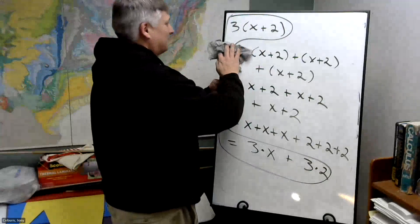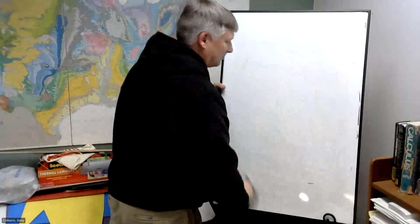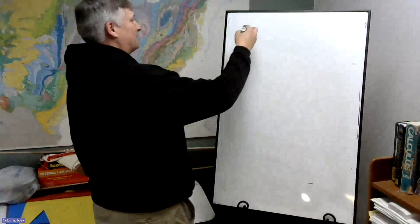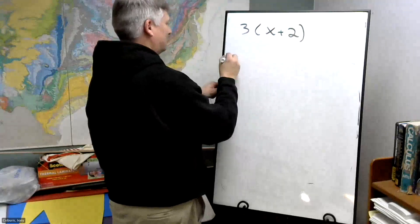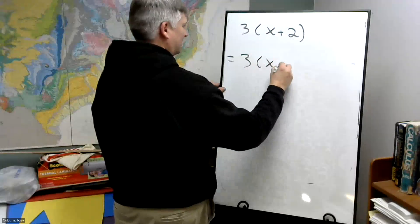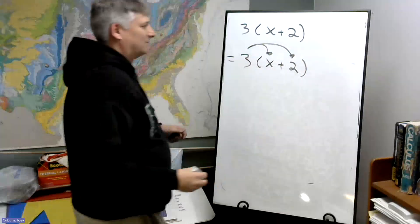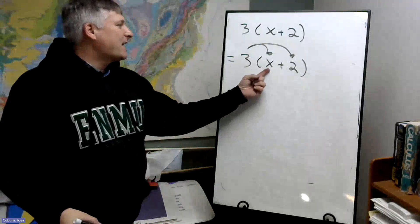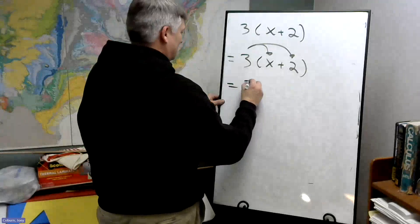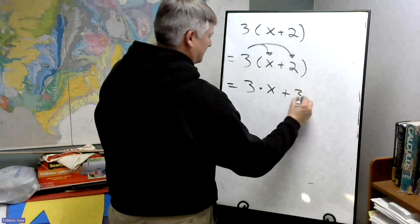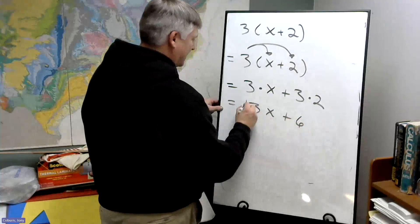In other words, we'll do this: we distribute the 3. We're going to attach it to everything on the inside of those parentheses with multiplication. 3 times x plus 3 times 2, or to simplify a little further, 3x plus 6.